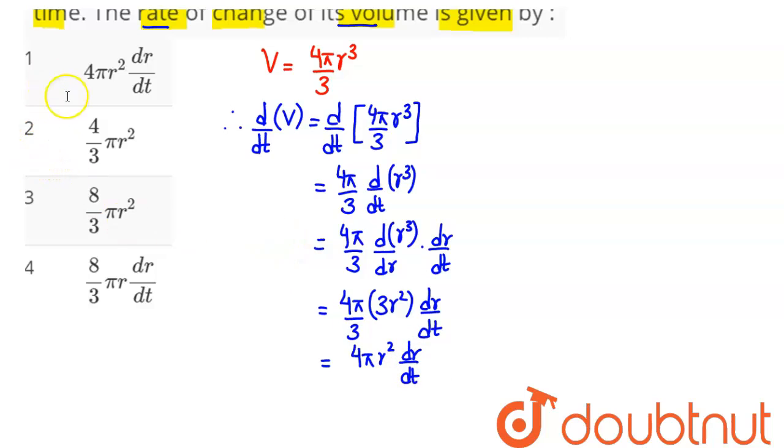So amongst the 4 options we can see option number 1, that is 4 pi r square dr by dt, is the correct answer. So 1 is our answer.